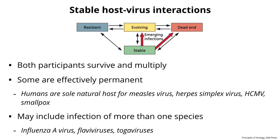In a stable host-virus interaction, the virus has been in the host for a number of years. Both multiply and the host is not wiped out. Humans are the only hosts for measles virus, herpes simplex virus, cytomegalovirus, smallpox, and poliovirus — that's why we can potentially eradicate these viruses. Stable doesn't mean only one species of host — influenza A viruses have stable interactions with humans but also other animals. West Nile has a stable interaction with humans but also has bird reservoirs, and mosquitoes transmit the virus back and forth.